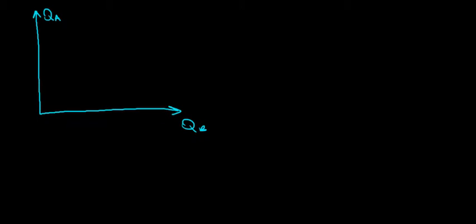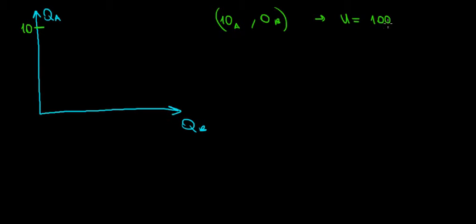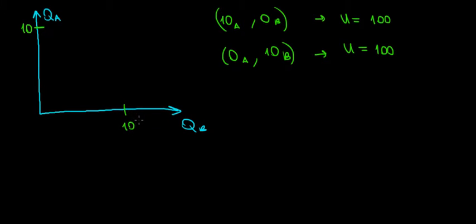Let's say that we are literally indifferent between apples and bananas, meaning we do not need a balance of both — we can go to extremes. We are willing to have 10 kilos of apples and zero kilos of bananas. That's fine. Assuming this gives us a utility of 100 units, we can also have 100 units of utility by having zero kilos of apples and 10 kilos of bananas. So we are literally preferring them equally.